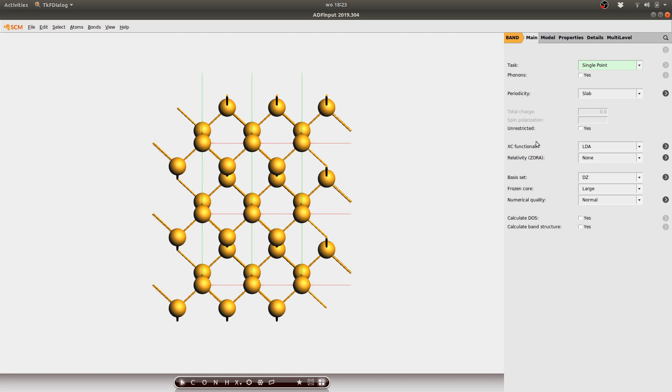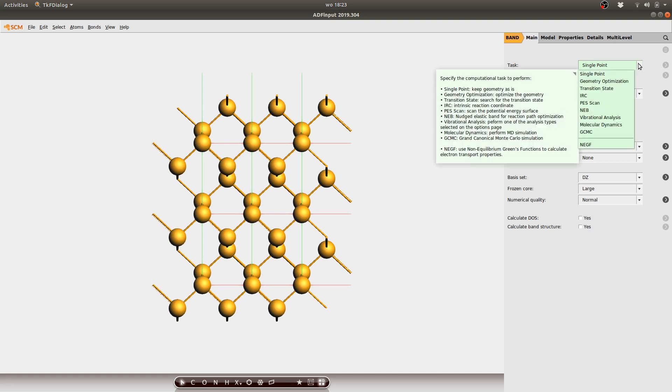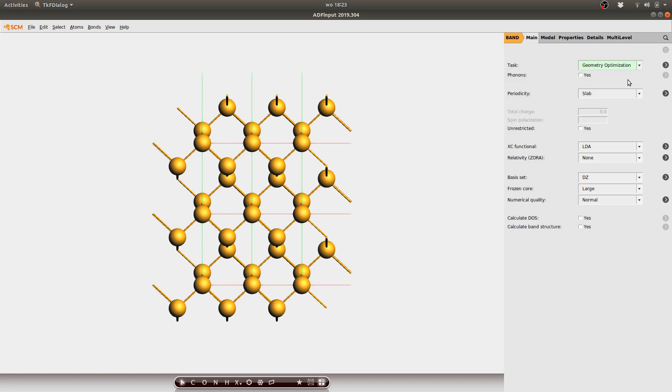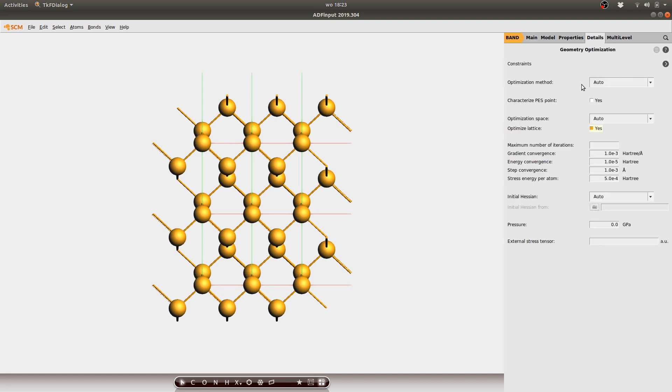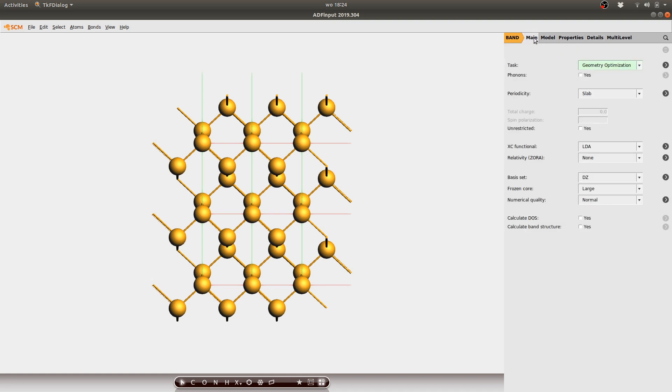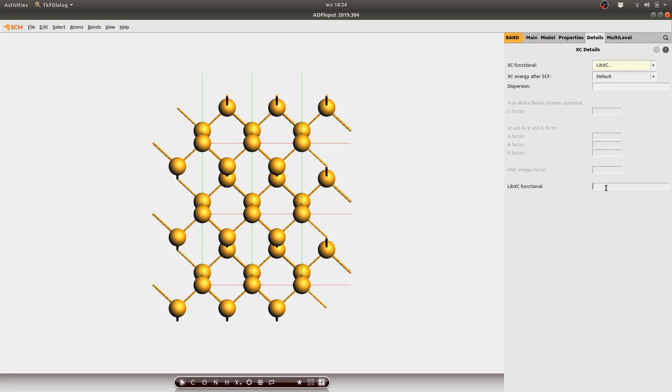First and foremost I would like the structure to be relaxed so I pick geometry optimization as a task. Furthermore under options I also pick optimize lattice in order to enable the relaxation of the lattice parameters. I then pick libxc in order to select my functional.